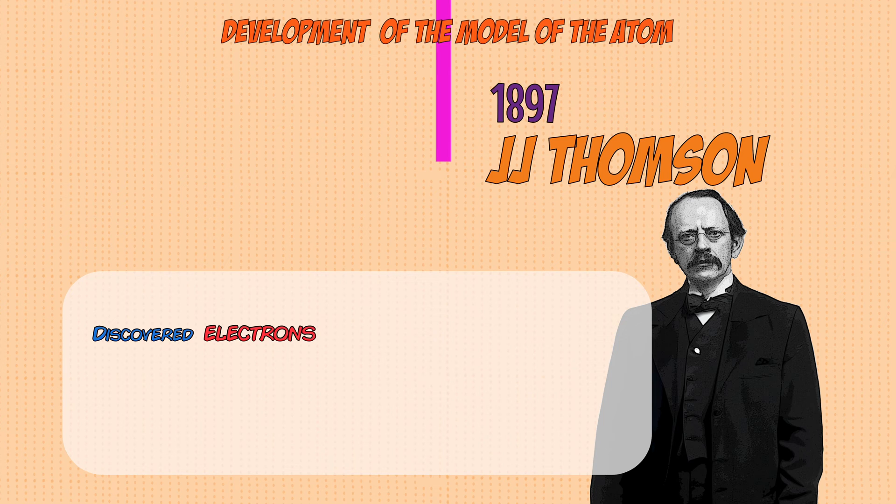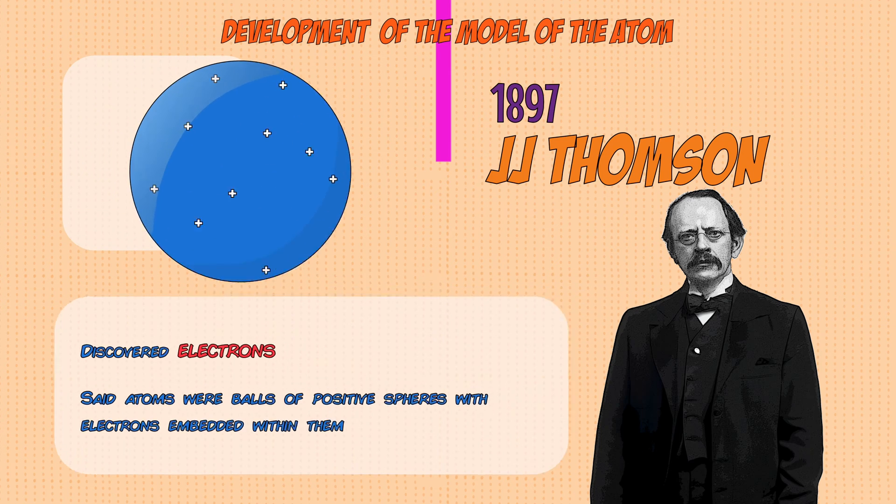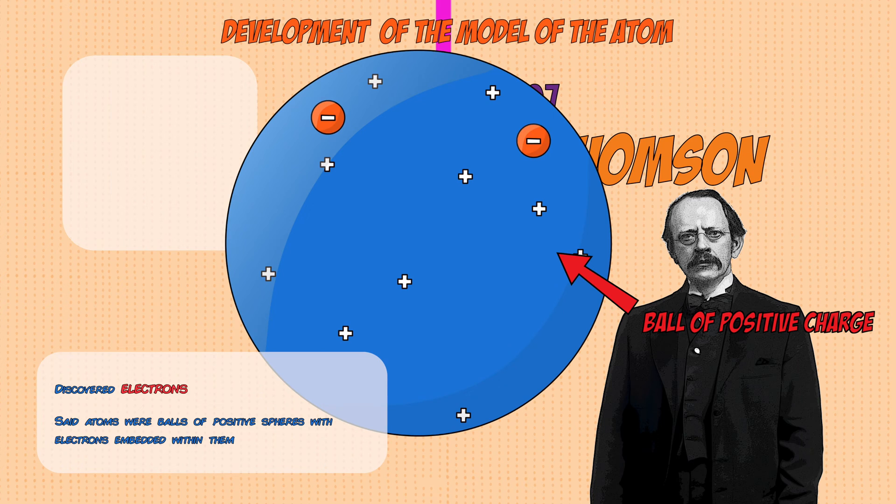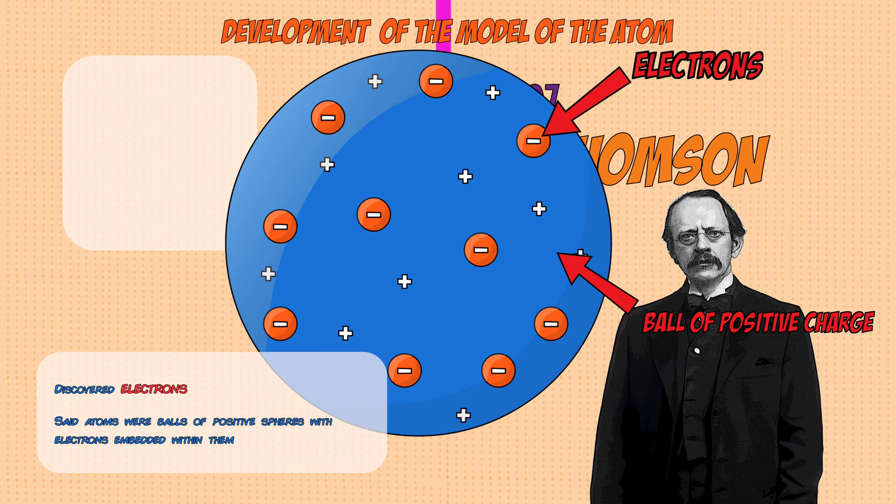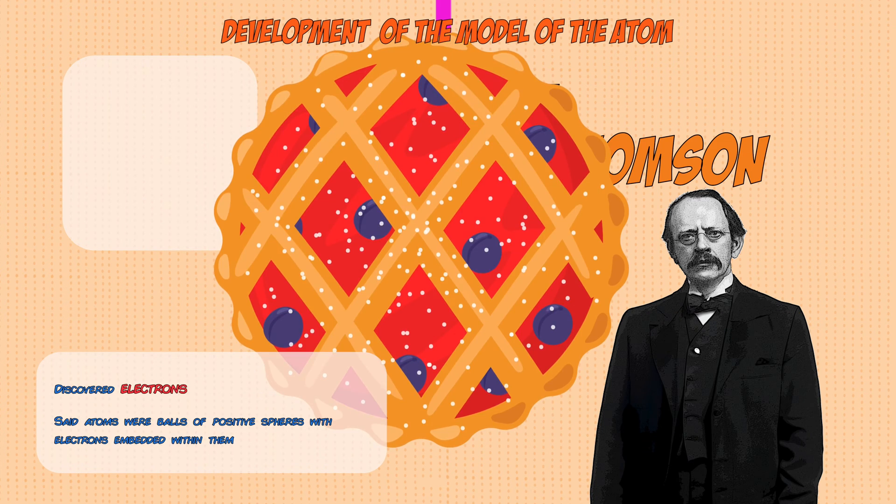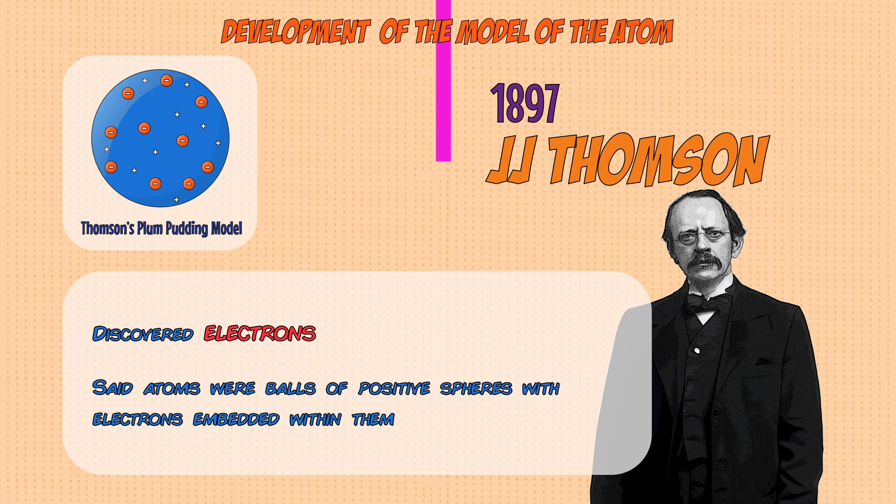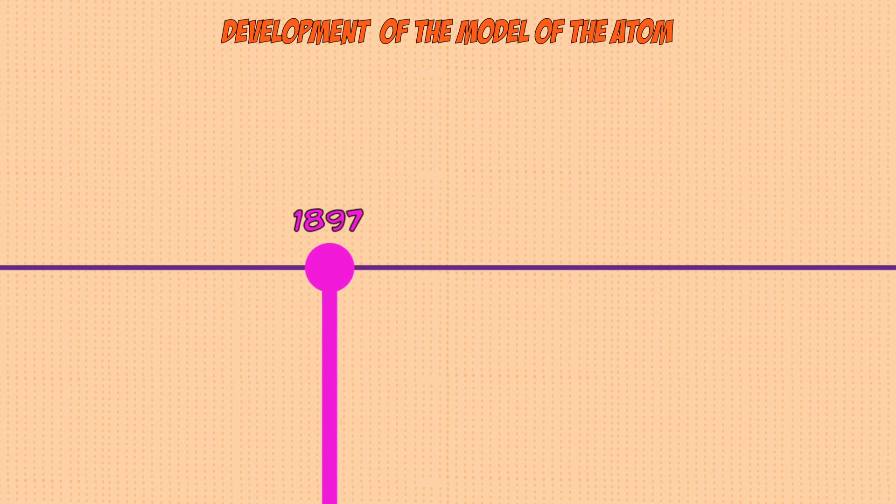Instead of the atom being a single thing, he said that they were balls of positive charge that had negative electrons embedded within them, like plums in a plum pudding. Hence, he called this the plum pudding model. But the plum pudding model didn't last long.